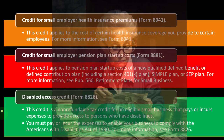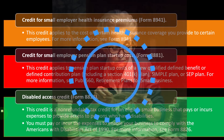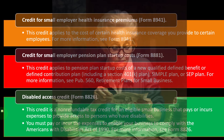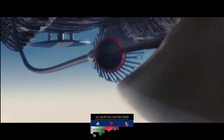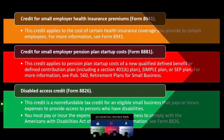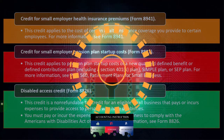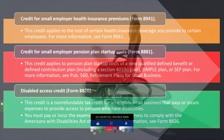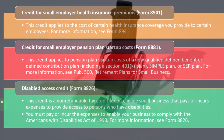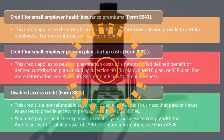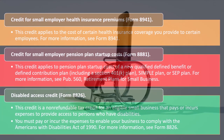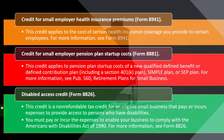The Disabled Access Credit is on Form 8826. This is a non-refundable tax credit for an eligible small business that pays or incurs expenses to provide access to persons with disabilities — such as ramps or wheelchair-accessible elevators. You must pay or incur the expenses to enable your business to comply with the Americans with Disabilities Act of 1990. For more information, see Form 8826.